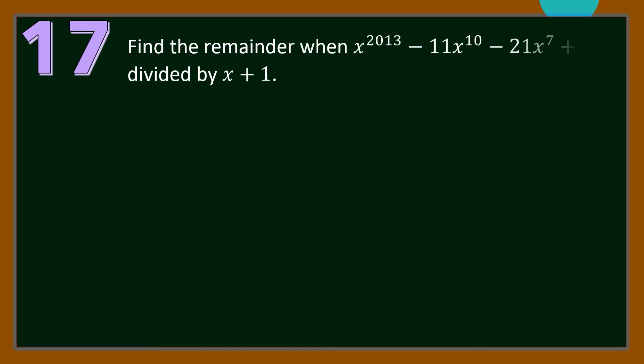Number 17. Find the remainder when x^2013 − 11x^10 − 21x⁷ + 5 is divided by x + 1. For our suggested solution, we're going to use the Remainder Theorem. In order to get the remainder, we will evaluate P(−1).